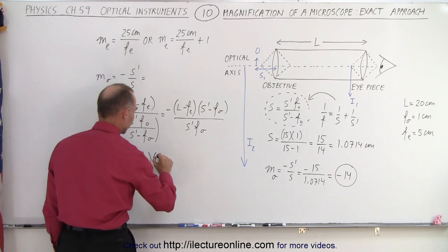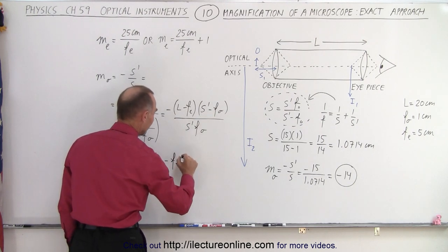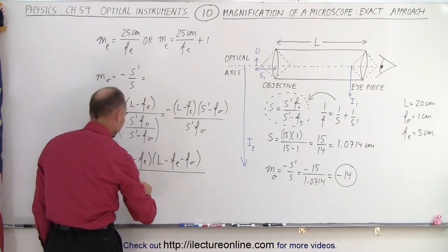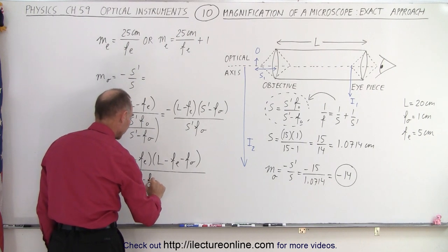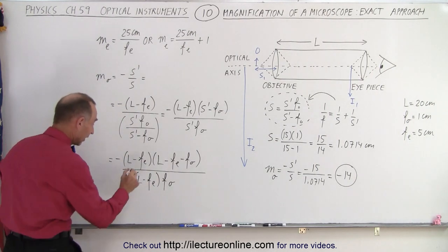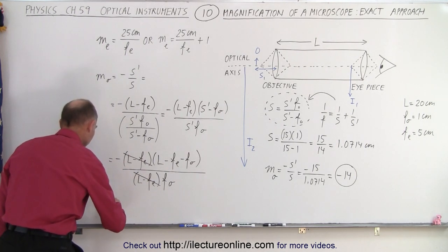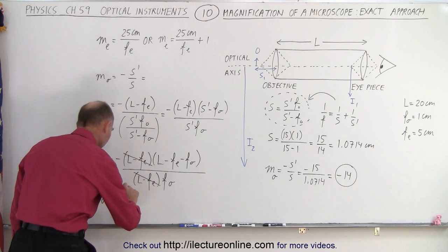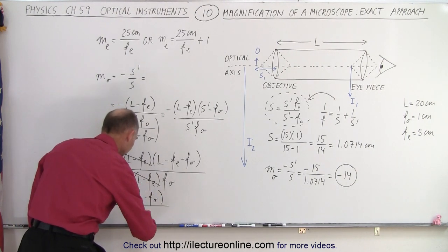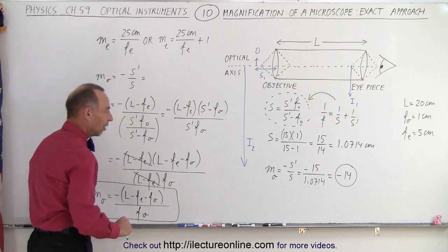Making the substitution, s-prime equals L (the length of the microscope) minus the focal length of the eyepiece. So we get: minus (L minus f-eyepiece) times (L minus f-eyepiece minus f-objective), all divided by (L minus f-eyepiece) times f-objective. The (L minus f-eyepiece) terms cancel, leaving the general equation: the magnification of the objective equals minus (L minus f-eyepiece minus f-objective) divided by f-objective.